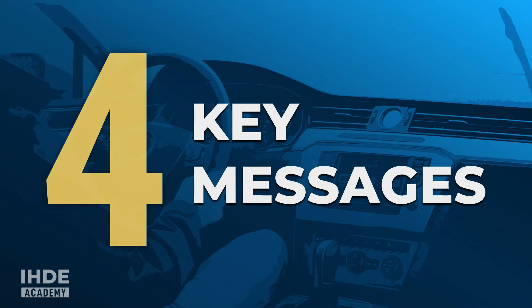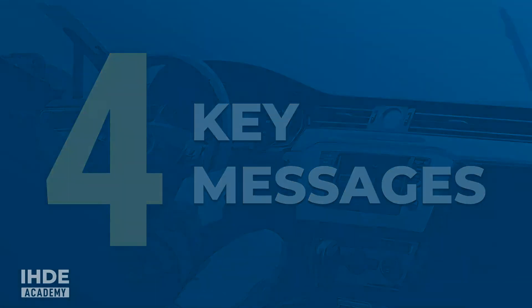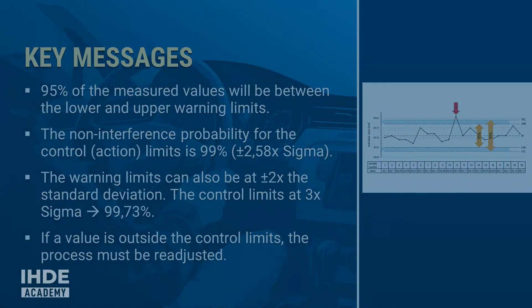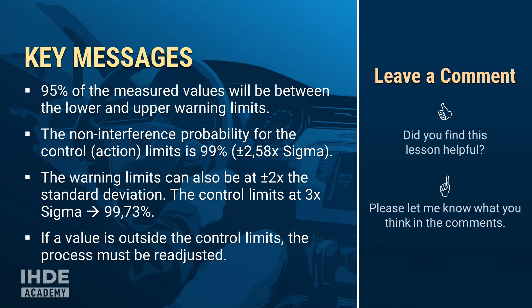That was a lot of new information. To conclude, here are the four most important key messages: 95% of the measured values will be between the lower and upper warning limits. The non-interference probability for the control or action limits is 99%, which is ±2.58 times the standard deviation. The warning limits can also be at ±2 times the standard deviation and the control limits at ±3 times the standard deviation. And if a value is outside the control limits, the process must be readjusted. If you found this lesson helpful, please let me know and leave a comment. Take care and see you next time.